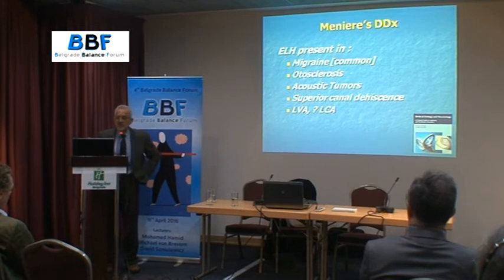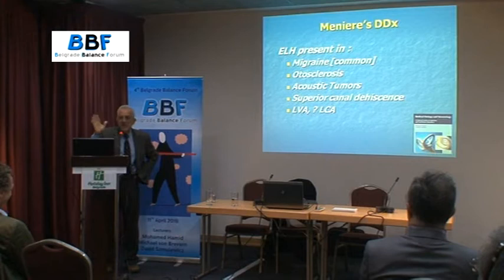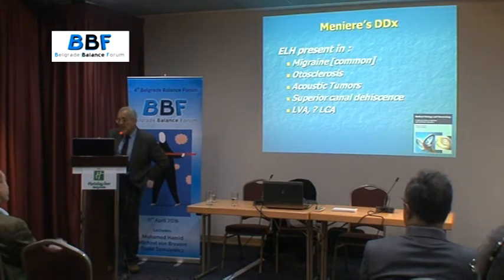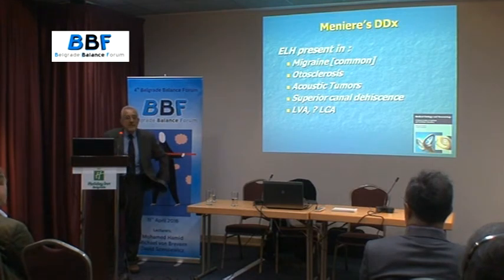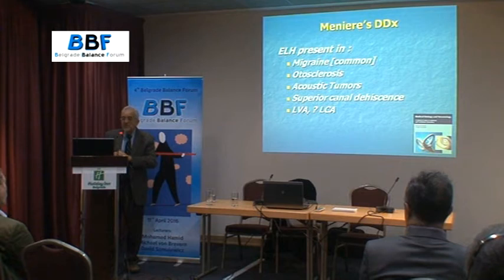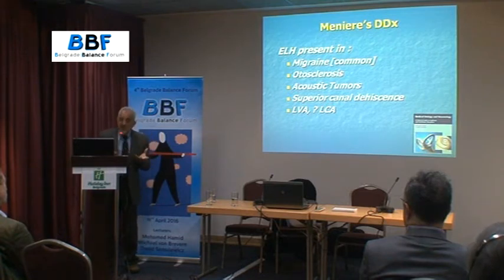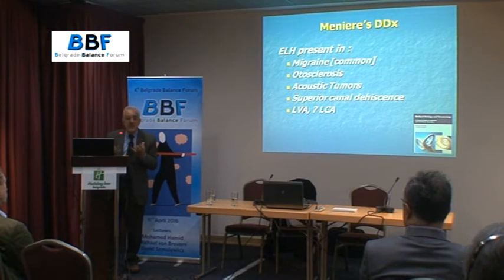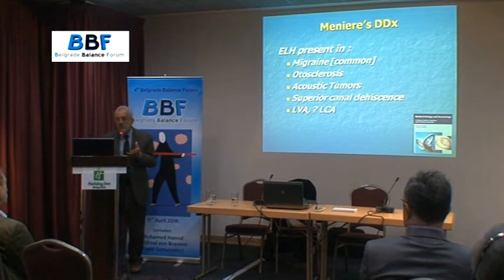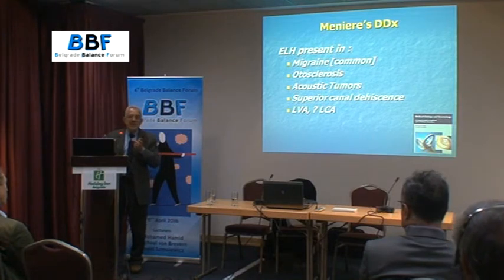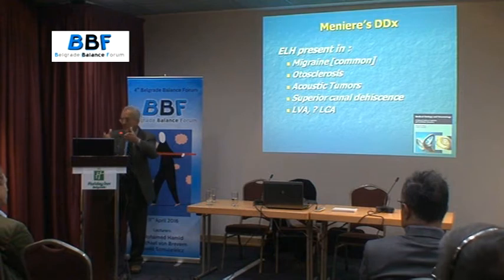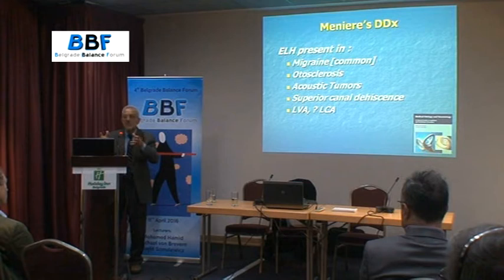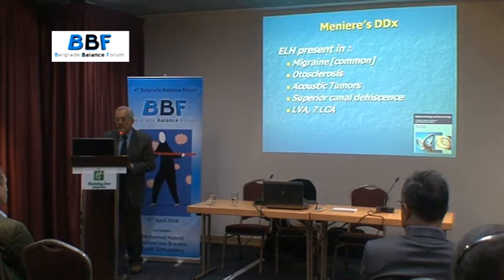What is the differential diagnosis of Meniere's disease? The first and most common is migraine. Second, otosclerosis — chronic otosclerosis, not early, would lead to endolymphatic hydrops, as well as acoustic tumors. Superior canal dehiscence can present with typical hydropic symptoms just like Meniere's disease. Large vestibular aqueduct would also present with conductive hearing loss early, some imbalance, not necessarily vertigo. And finally, the cochlear aqueduct — I have seen a few patients with large cochlear aqueduct, and the ENT physician should make that call.